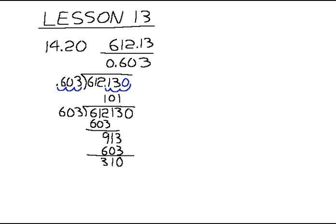That equals 310. Bring the zero down. 600 times 5 is 3,000, so 603 times 5 is 3,015 — so that goes in five times. Subtract those two and 85 would be the result.